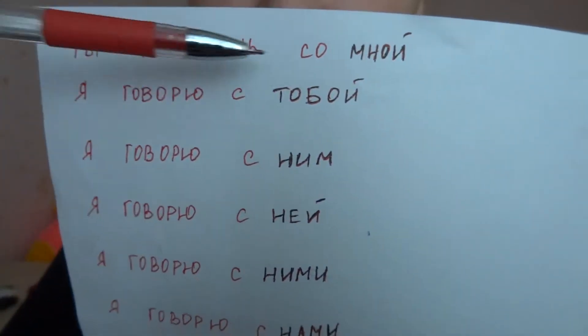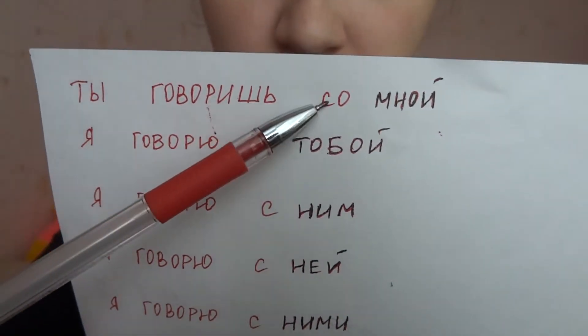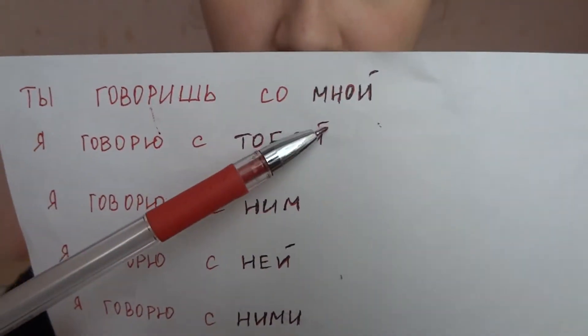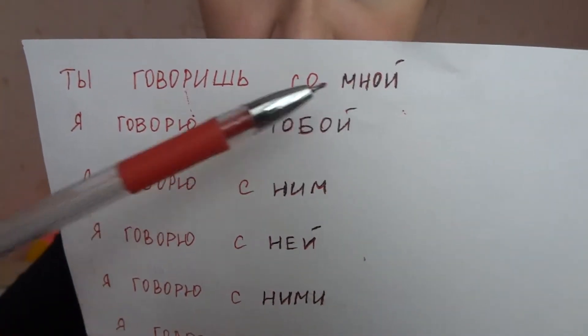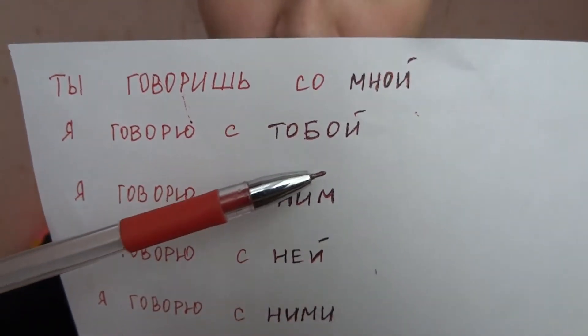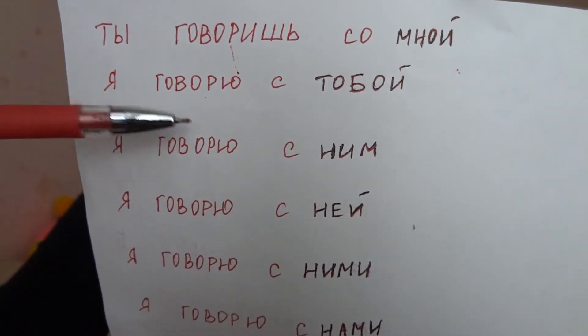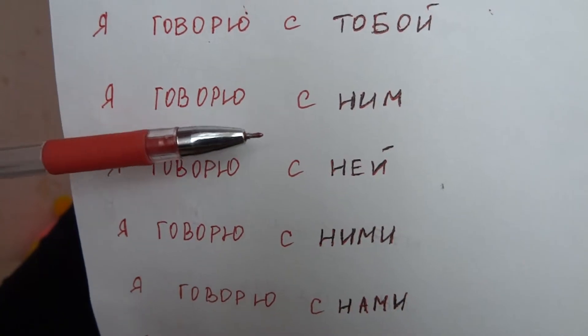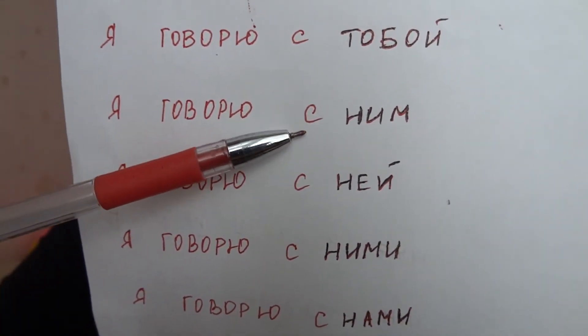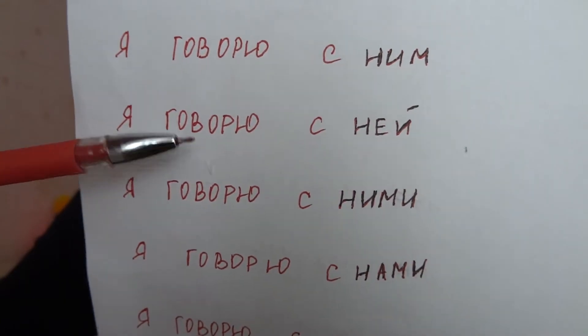I made some examples here. Ты говоришь со мной. Я говорю с тобой — I talk with you. Я говорю с ним — I talk with him. Я говорю с ней — I talk with her.